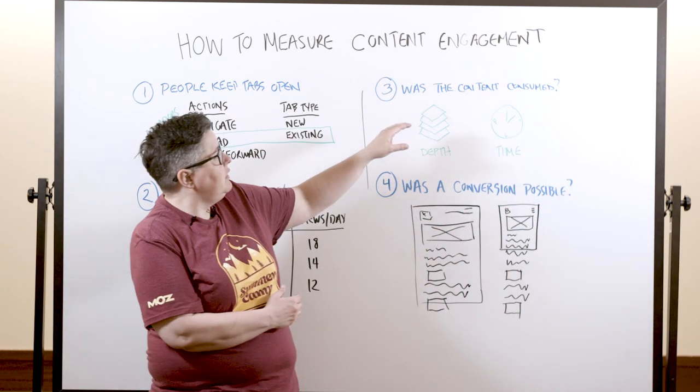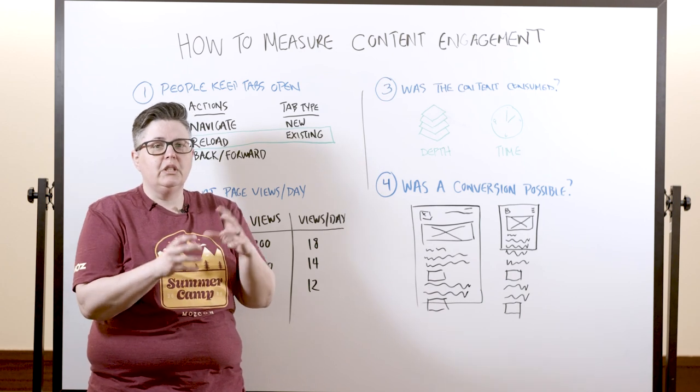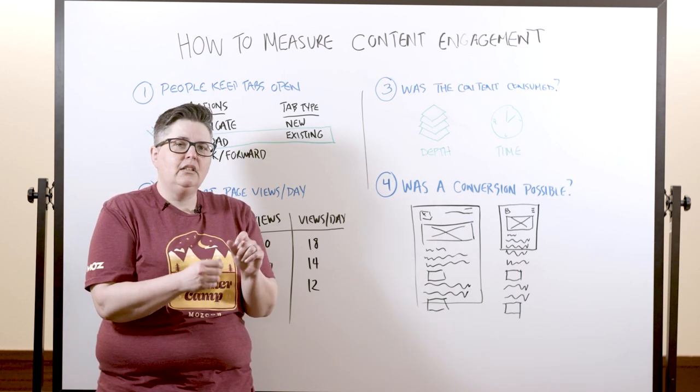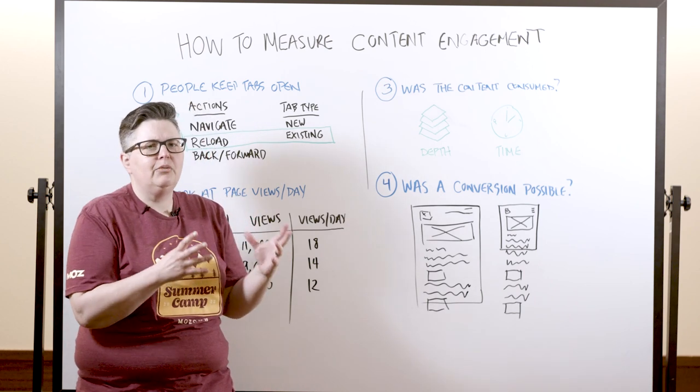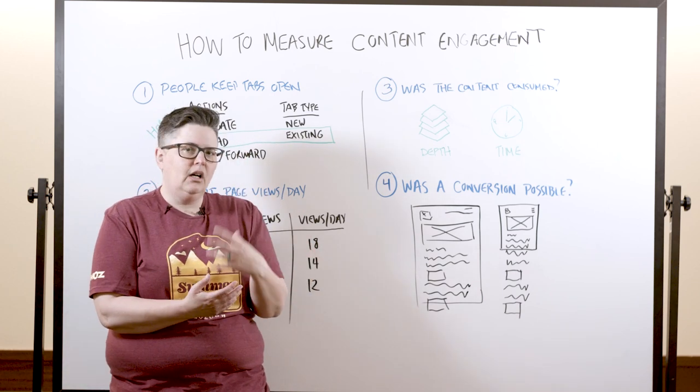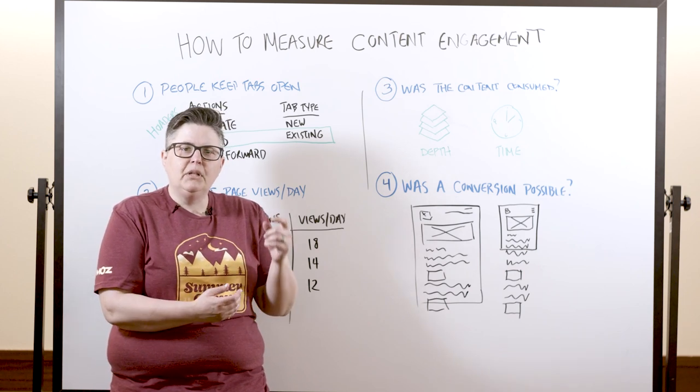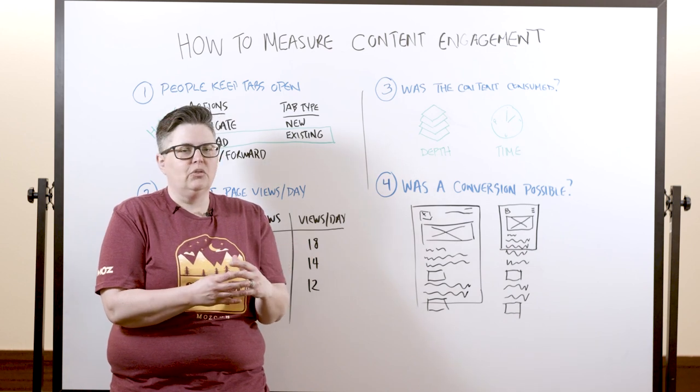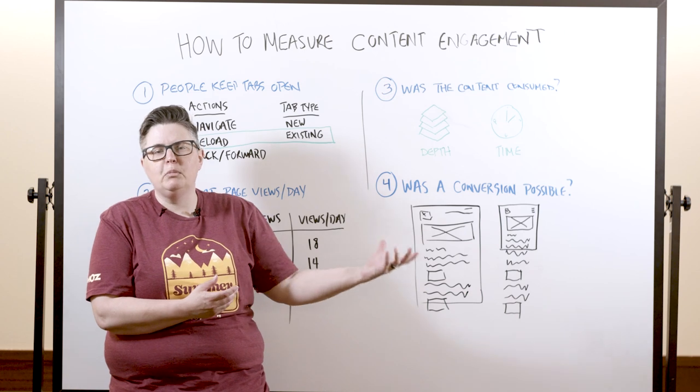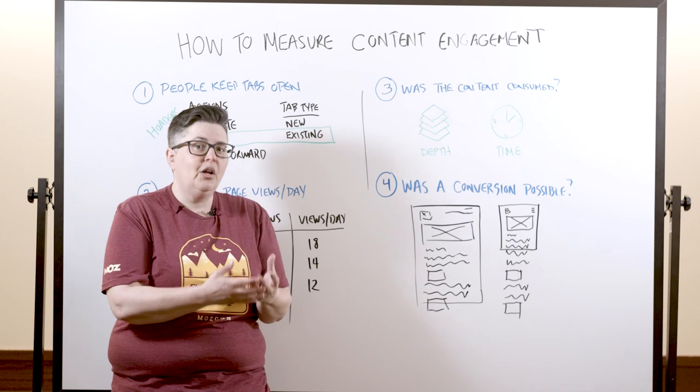All right, third thing, was the content consumed? So this is a recipe that is available on our website. Consuming is the idea that when you go to a site, you're watching a video, we know you watched the video, we know you clicked on it, we know how long you watched it. If you're reading a piece of content, we don't actually know if you read the whole thing, because content is different lengths, which means that there's different times it would take to read that post.